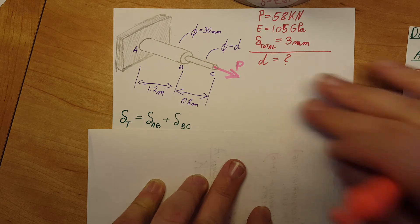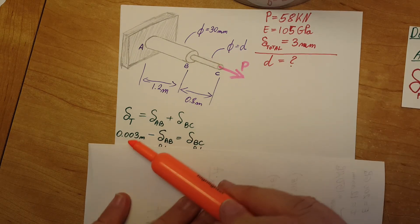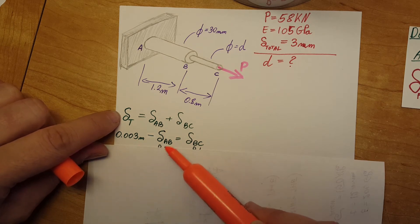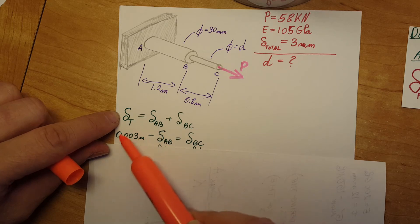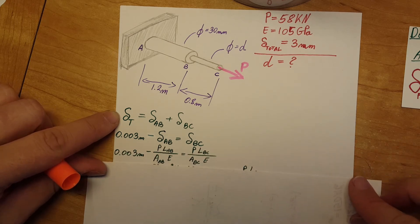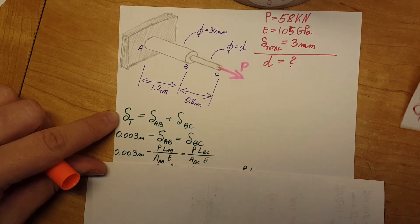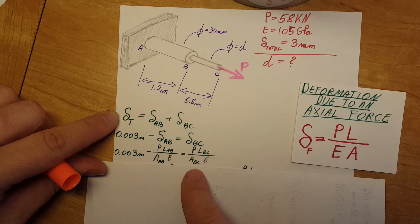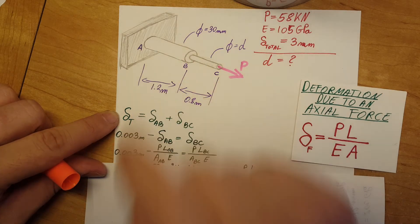In the next step what I did, I plugged in for the total deformation 0.003. I moved this to the other side since it's a constant, so all this side will be all constant and we have only deformation due to BC over here. Plug in my formula for the deformation for both sides. Make sure the length and the areas match the corresponding section that you are talking about.